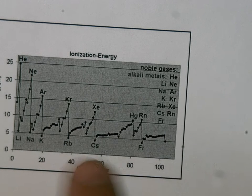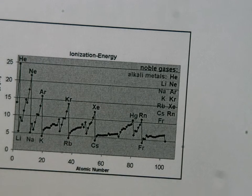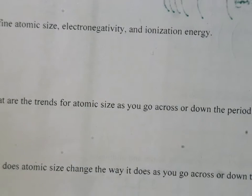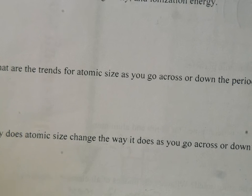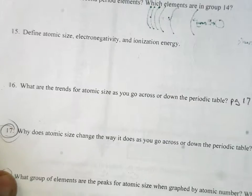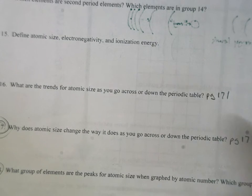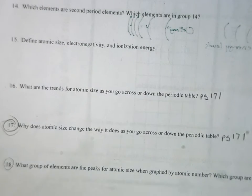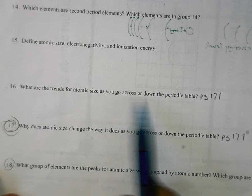Ionization energy is the energy it takes to pull an electron off an atom — really low on the left side of the table because those elements want to get rid of electrons, really high on the right. I've gone through and put the page numbers in your textbooks where you can look. I'd recommend you get your textbook open to that page, pause this video, take a look, and read the diagrams. Let's get started — number 16: what are the trends for atomic size as you go down or across the periodic table?